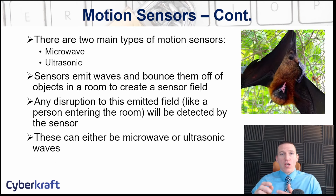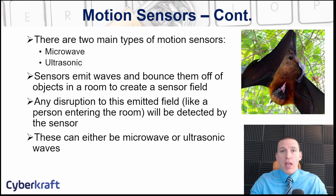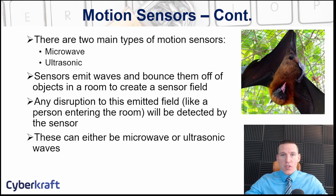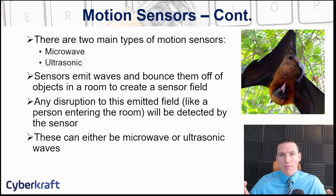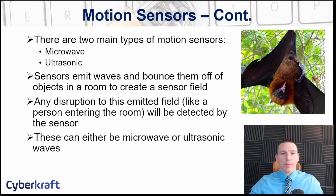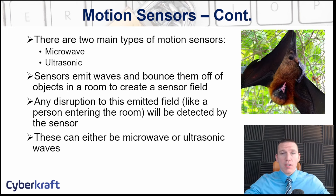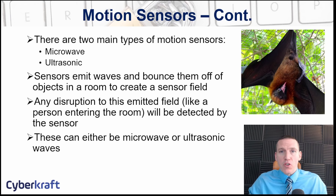Motion sensors use two main technologies: microwave-based and ultrasonic. Both types work by bouncing waves off of surfaces and retrieving those waves — similar to how bats and dolphins use echolocation. If there's any disruption in that field, like somebody walking into the area, the motion sensor is triggered.